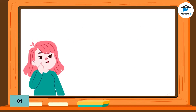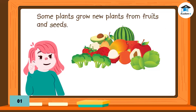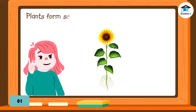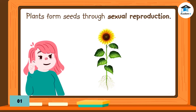Have you ever wondered how plants reproduce themselves? Some plants grow new plants from fruits and seeds. But how do you think seeds are formed? Plants form seeds through sexual reproduction — like in animals, but they have different reproductive body parts compared to animals.